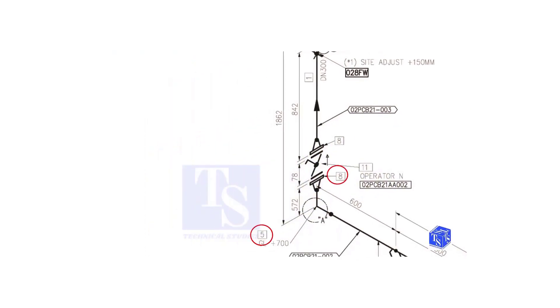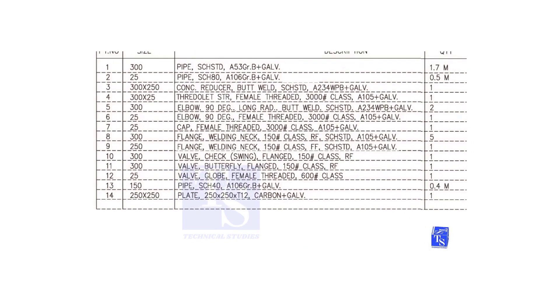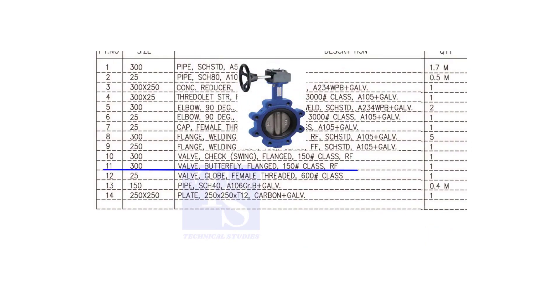We have already checked what items number 5 and 8 are. Item number 11 is a 300 NB, flanged, class 150, raised face butterfly valve.